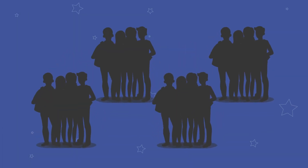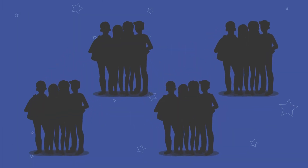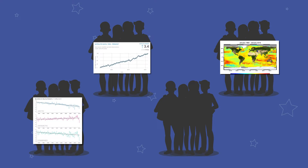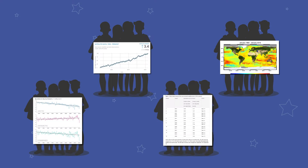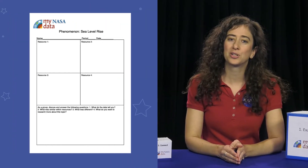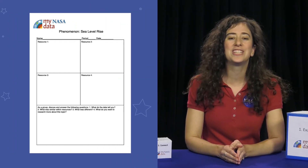Divide students into groups of four and distribute one of each of the maps or graphs to the students. Be sure that each of the four students in the group receives a different dataset to analyze. In small groups, have students observe and analyze the data with the goal of being able to explain the data patterns and trends. They can record their observations on the data sheet.